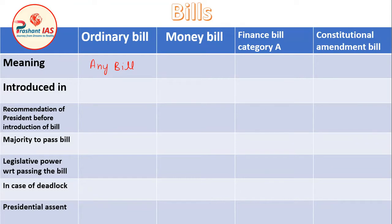The next question is where this bill can be introduced. An ordinary bill can be introduced either in Lok Sabha or in Raj Sabha. So in the matter of introduction of an ordinary bill, both houses — Lok Sabha and Raj Sabha — have equal power.